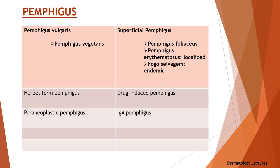Based on the level of blister formation, clinical and histopathological features, pemphigus is classified into pemphigus vulgaris. Pemphigus vegetans is a variant of pemphigus vulgaris. Superficial pemphigus is further classified as pemphigus foliaceus, pemphigus erythematosus, and fogo selvagem. Other types include herpetiform pemphigus, drug-induced pemphigus, paraneoplastic pemphigus, and IgA pemphigus.